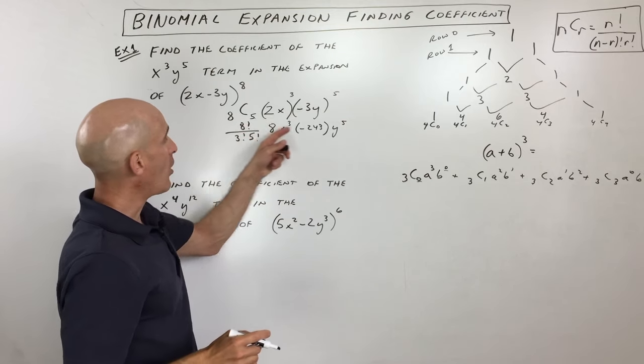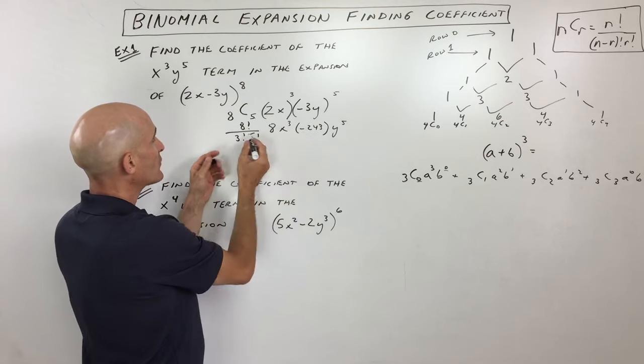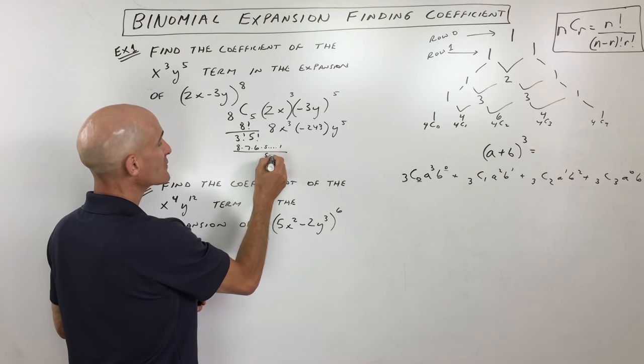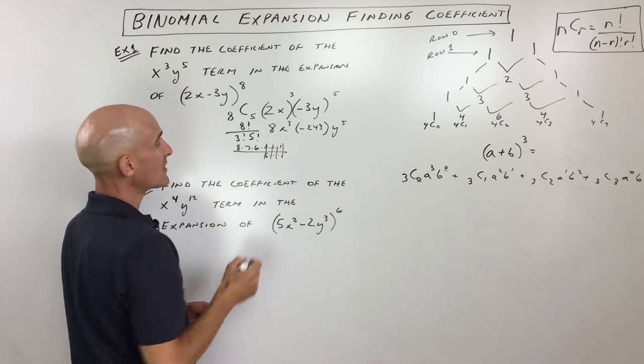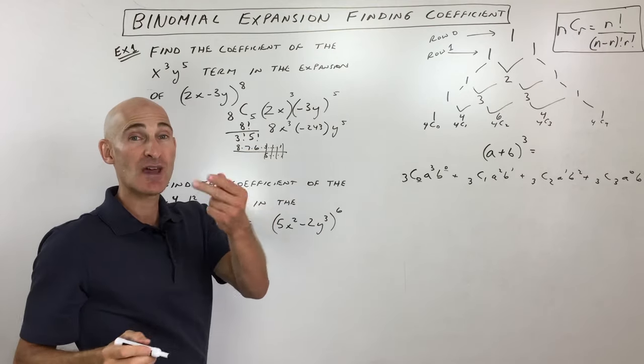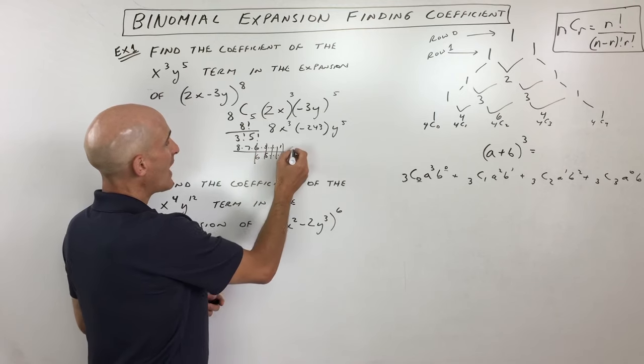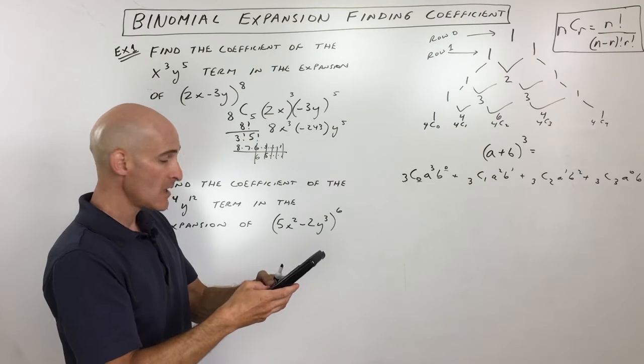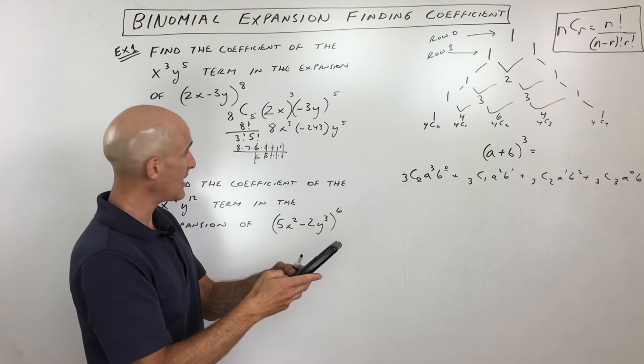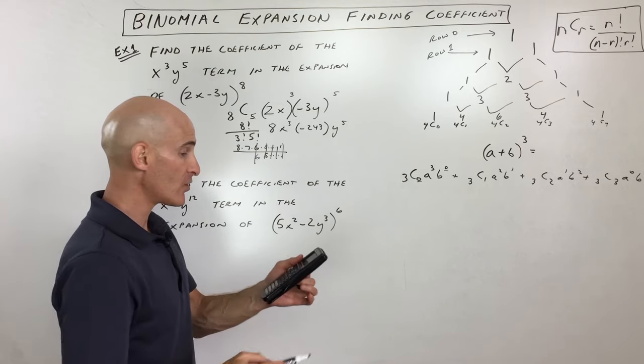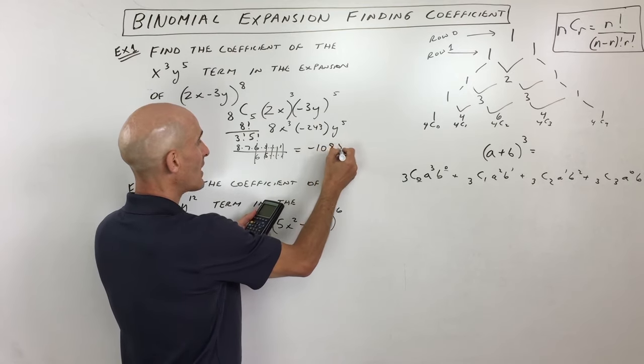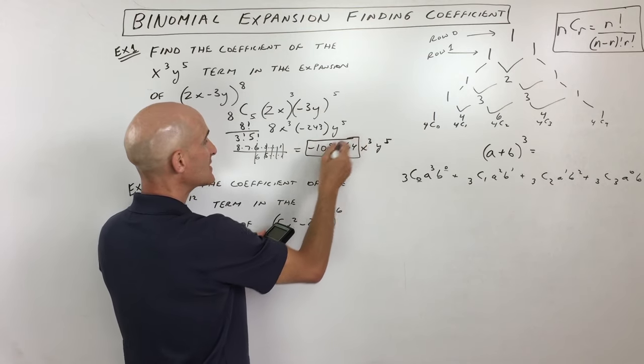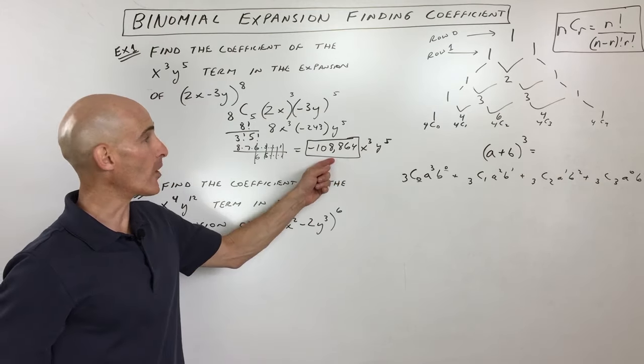Now, all we have to do now is simplify all the numbers. That's going to be our coefficient in front of the x cubed y to the fifth term. So 8 factorial is really like 8 times 7 times 6 times 5, all the way down to 1. 5 factorial is 5, 4, 3, 2, multiplying all the way down to 1. So you can see those are canceling. 3 factorial is 3 times 2 times 1, which is 6. So you can see those are canceling. So now we can see we have 8 times 7, which is 56, times 8, times negative 243. So let's go to the calculator here. We've got 56 times 8 times negative 243. So that comes out to negative 108,864 x cubed y to the fifth. Now, if they just want that coefficient, you would just write down the negative 108,864.